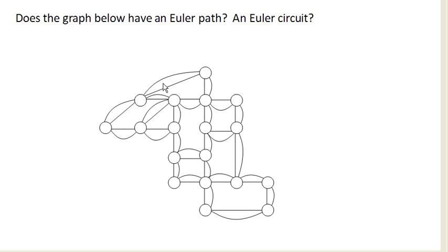Now, if we look at this graph, you can see that every vertex is even degree, and so this graph will indeed have an Euler circuit, because every vertex has even degree.